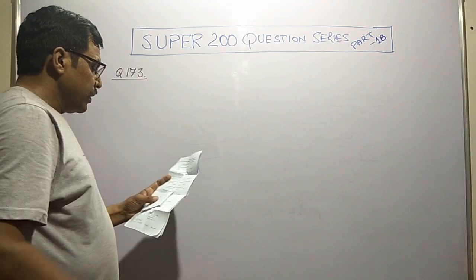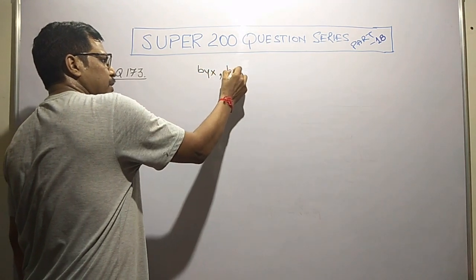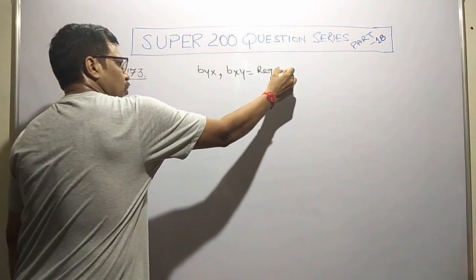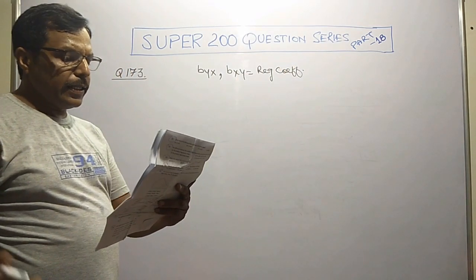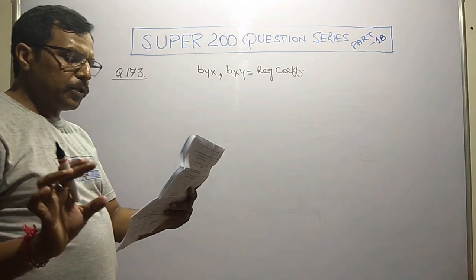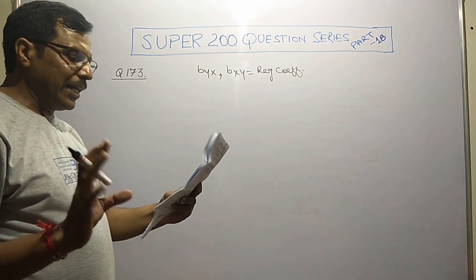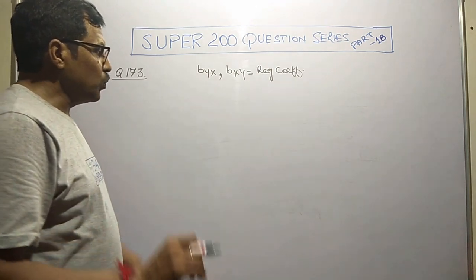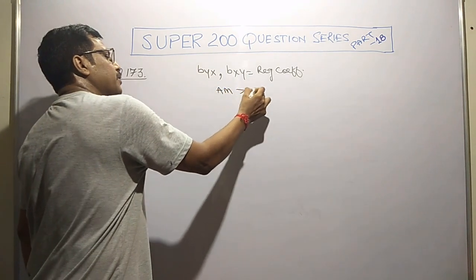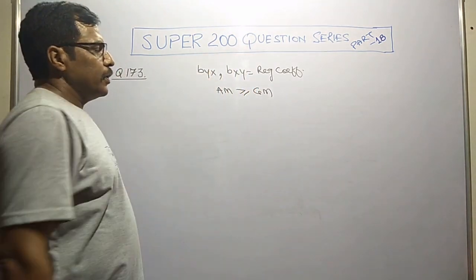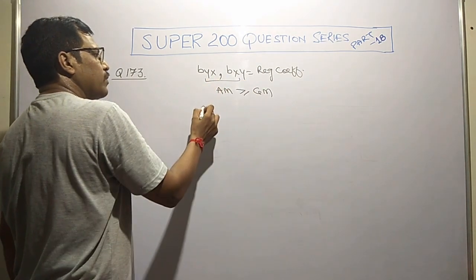Here it is question number 173. Again we are given byx and bxy, these two regression coefficients, and the relation between these two are shown in variety of options. The way to get those things, we have the relation: arithmetic mean is greater or equal to geometric mean of these two values.